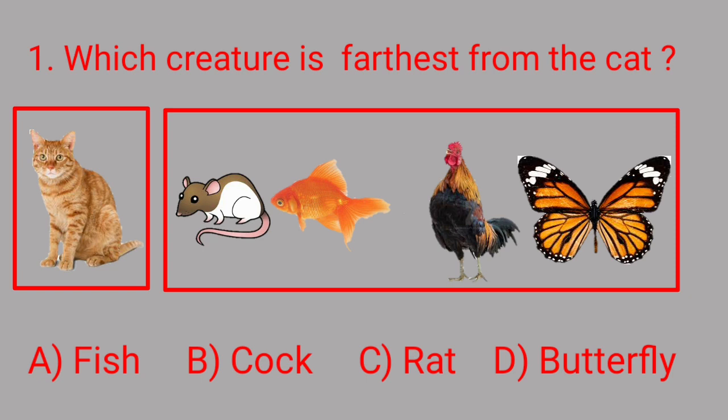Students, look carefully at this picture. On the right hand side of the cat, few creatures are given. First of all is rat, which means the distance between cat and rat is least. Next is fish, which means the distance of fish from cat is more than that of rat.